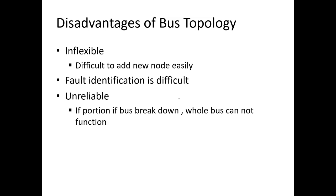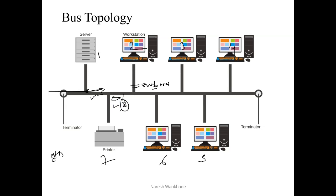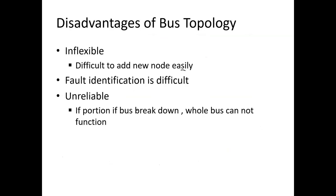Now we have some disadvantages associated with bus topology. The first one is that it is inflexible. If you want to add any additional node in bus topology then it is difficult to add. For example, if we have seven nodes and you want to add a new node between node seven and node two, the distance between nodes seven and eight is actually less compared to the distance between any two existing nodes. In order to add a new node, you have to reshuffle all existing nodes, so there is no flexibility as far as addition of a new node is concerned.